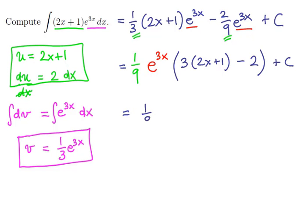And so if we clean this up, we have 1 ninth e to the 3x times the expression 6x plus 3 minus 2.